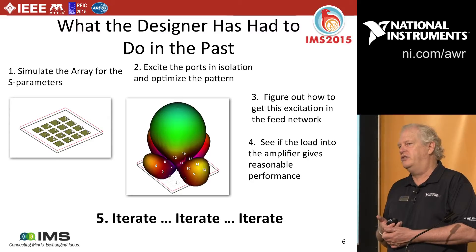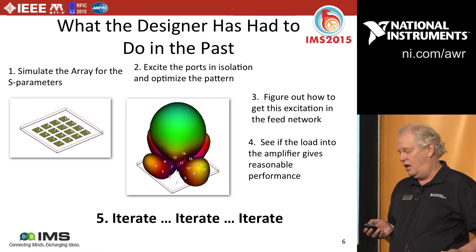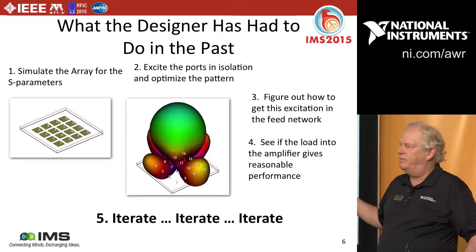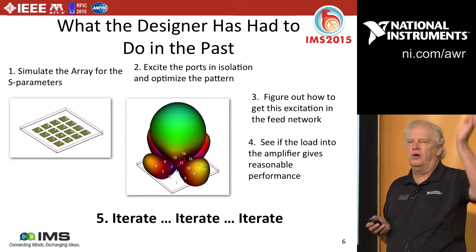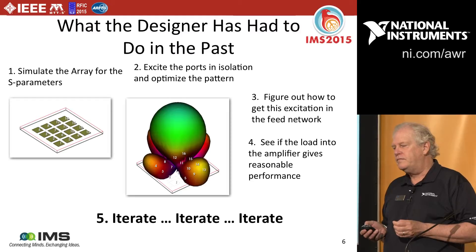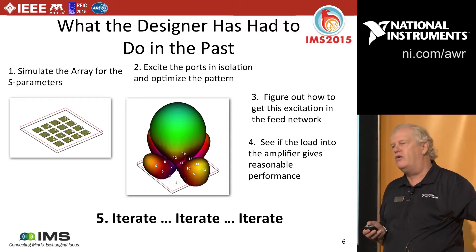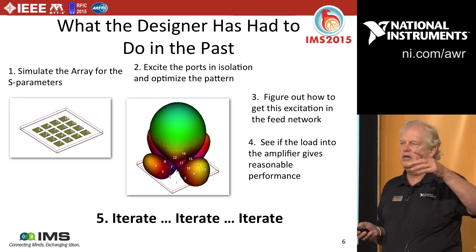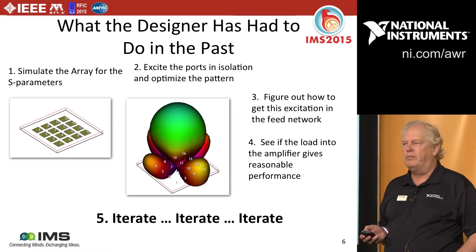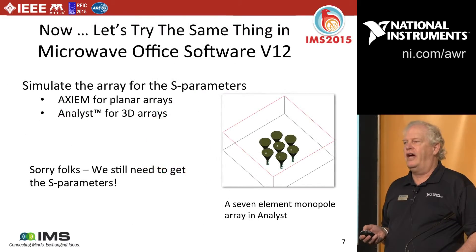Then you take the S-parameter file, excite all the ports, and look at the beam — typically in some kind of 3D annotation — moving sliders with all the ports as the beam moves around. Then you have to take those port impedances, run over to the schematic, load them in, re-simulate the power amplifier, and see what it is. You keep iterating through this procedure and it is really a pain — it's error prone, you're getting frustrated. What we've done is automated that process.